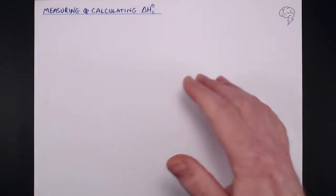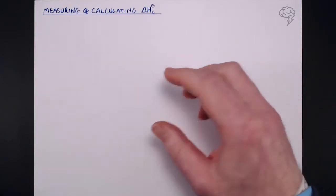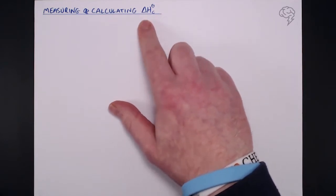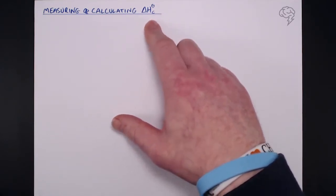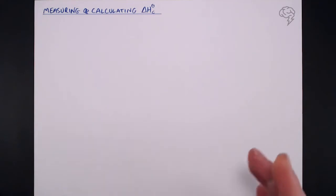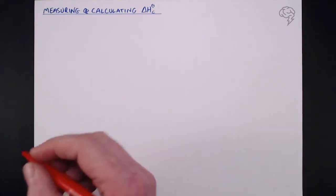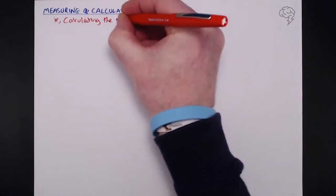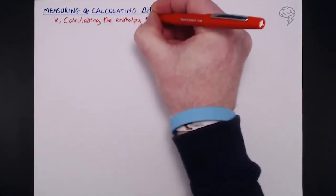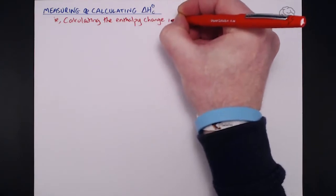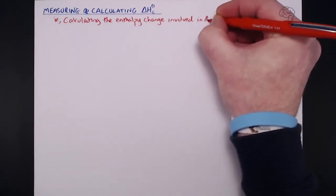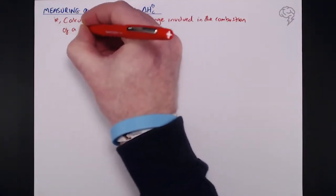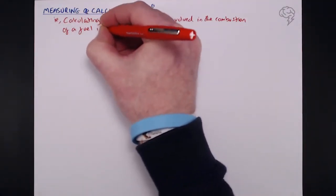In this example calculation using Q = -mcΔT, we're going to be looking at measuring and calculating a delta Hc. Delta Hc is the enthalpy change of combustion. There's a standard setup for this experiment which I'm going to show you, and of course how to do the calculations — calculating the enthalpy change involved in the combustion of a fuel in kilojoules per mole, the delta Hc for the fuel.